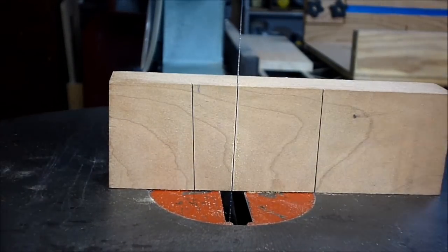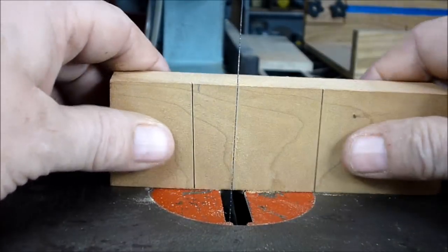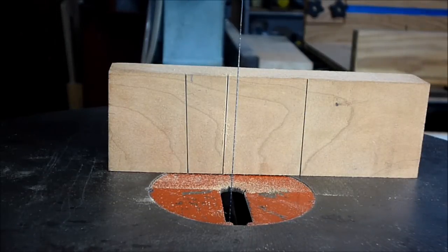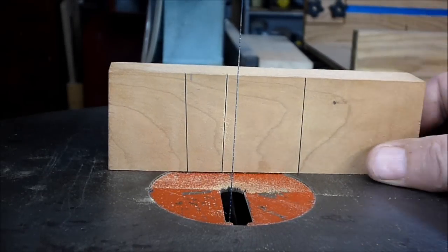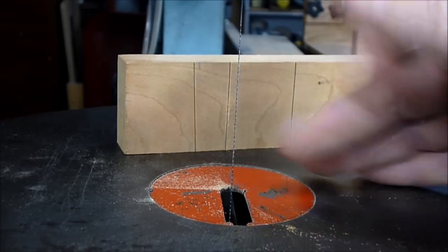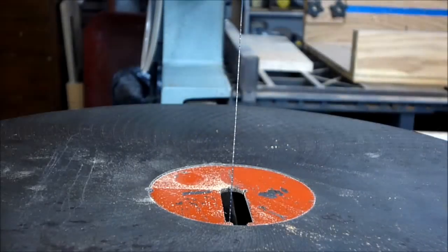Okay, so now by doing that, we know that this table is perfectly perpendicular to the blade, or at a 90-degree angle to the blade. So we don't have to continue doing this process over and over and over every time we have to move the table.